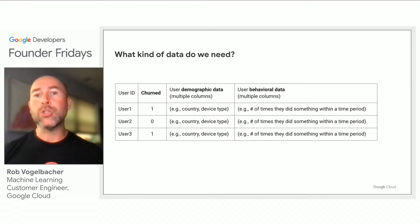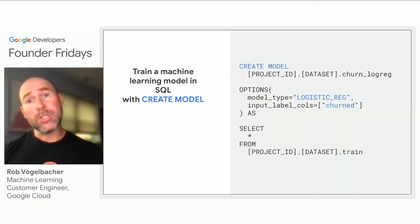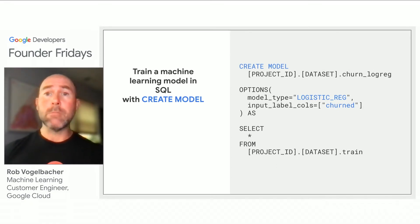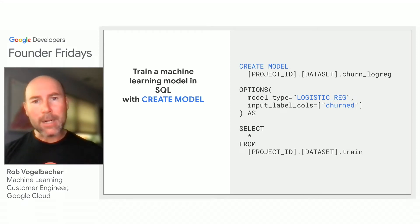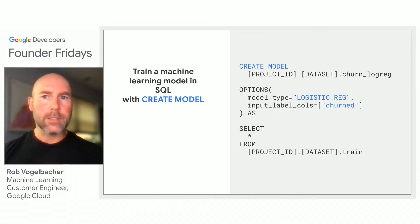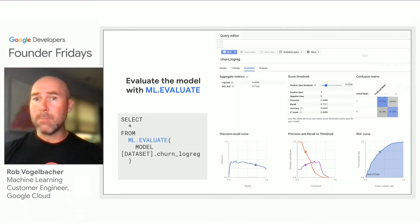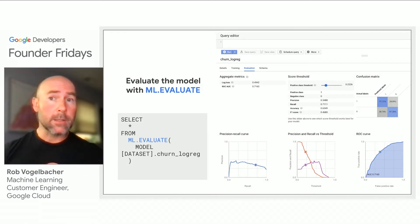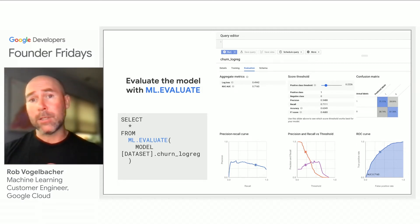Ultimately, how you define churn is going to be up to you based on how you manage your business. To build your machine learning model in BigQuery, choose a classification model type like logistic regression or boosted trees, identify the column with your churn flag, and then select the table or view holding your customer demographic and behavioral data. That's it. After the model has been built, you can inspect the results directly in the BigQuery console, or use SQL to understand how well the model performed and its predictive value across different probability thresholds.